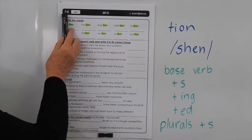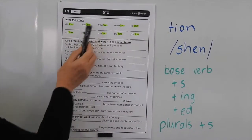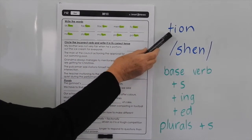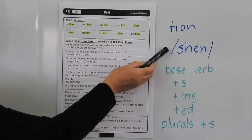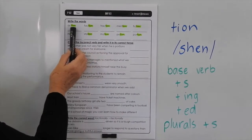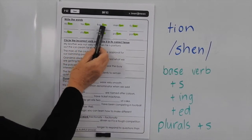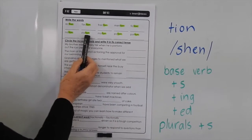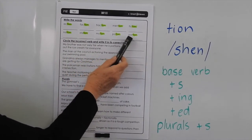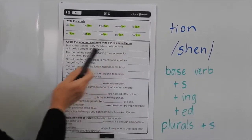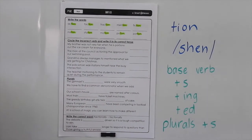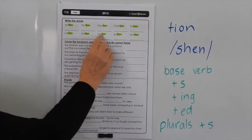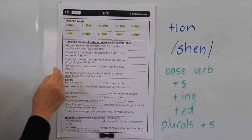This is level P, list 2, and we're doing the day 3 list. This is where we're using T-I-O-N for the 'shun' sound at the end of these words. So: action, faction, fraction, mention, fiction, nation, station, motion, potion, and portion. If we go through, we can see that the T-I-O-N — just highlight that — is in each of these words.